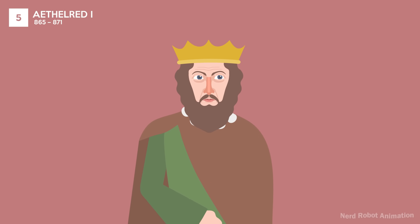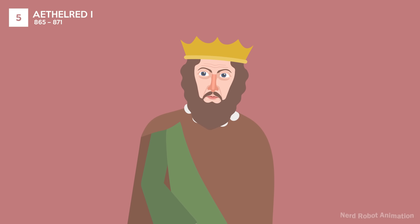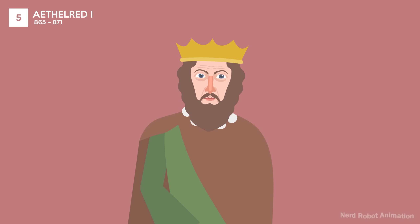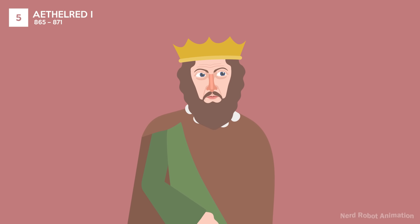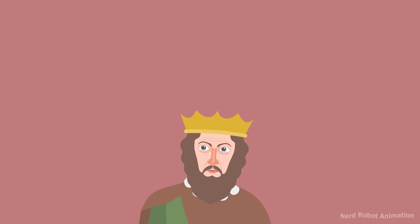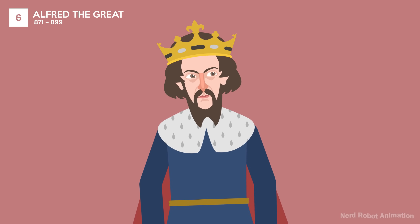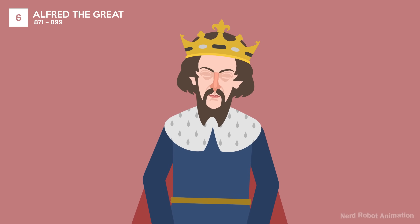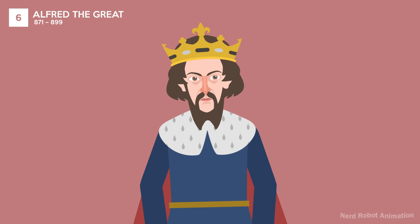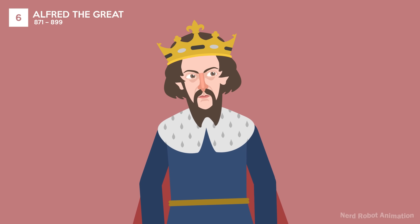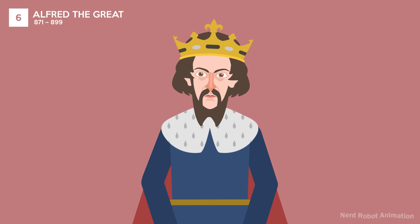Aethelred I's reign was dominated by battles against the Vikings, including the Great Heathen Army. He died in battle, passing the throne to his younger brother, Alfred the Great. Alfred the Great is famous for his defense against the Vikings and his subsequent treaty, and is also credited with promoting education and legal reform. He is often remembered for the possibly apocryphal story of burning some cakes while hiding from the Vikings.